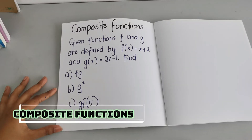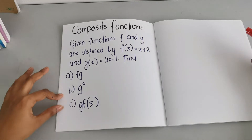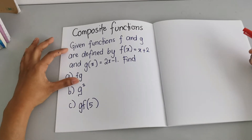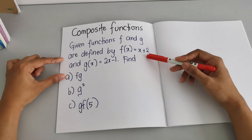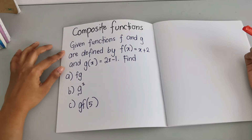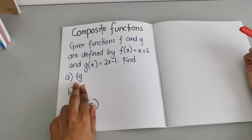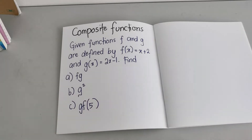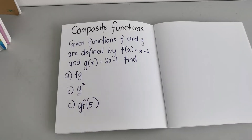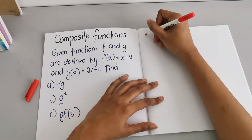In this video I'm going to explain composite functions and give you an example of how to solve a composite function problem. Given functions f and g are defined by f(x) = x + 2 and g(x) = 2x − 1. Find function fg. As you can see, there are two functions that are combined — this is called a composite function. Let's solve the first question.